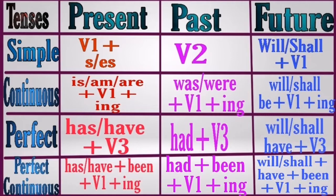Present tense has four parts, past tense has four parts, and future tense has four parts — totaling 12 tenses and 12 rules. But it is not hard if you understand the rules in present tense, because you can relate them to form past tense and future tense. So without wasting time, let us see the rules of present tense.